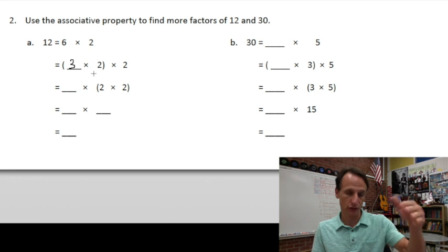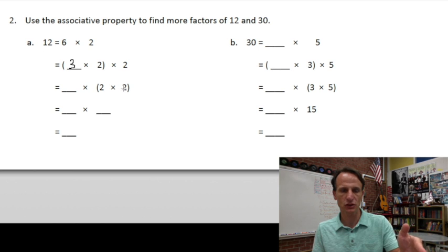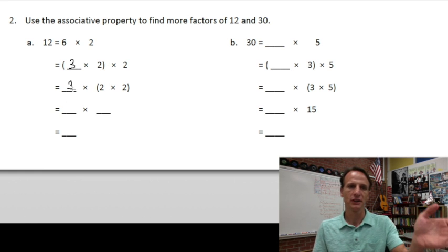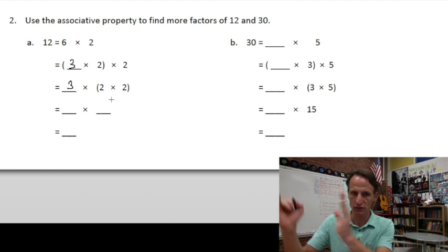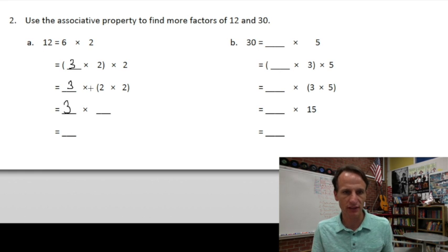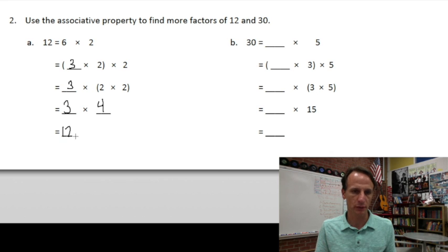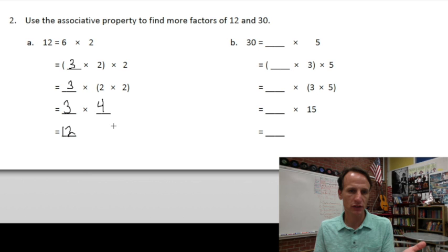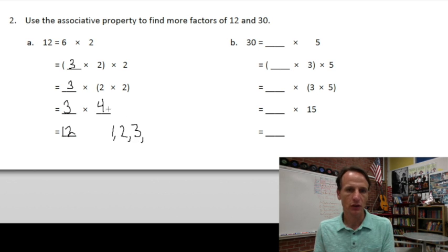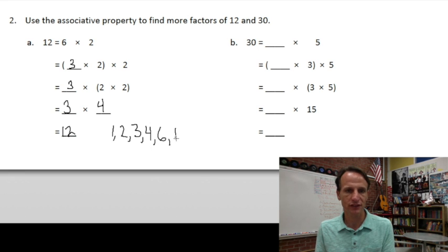We can use the associative property to change the parentheses so that we're looking at two times two. Three times two times two is the same as three times two times two — we're just associating them differently. Three times two in parentheses, then two times two in parentheses is four. And three times four is twelve. When we write out all the factors we found — one, two, three, four, six, and twelve — we can see we deduced three is a factor of twelve, and using the associative property, we deduced four is a factor of twelve as well.